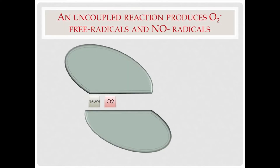In this illustration, we have an uncoupled reaction. If you recall, in the last lecture, we showed an example of a coupled reaction that produced nitric oxide in proper amounts, in addition to L-citrulline, another amino acid, which we will cover later. In an uncoupled reaction, the two halves of the enzyme are joined around the NADPH and oxygen molecules, but the BH4 and LA concentrations, for the sake of this illustration, are at half strength.